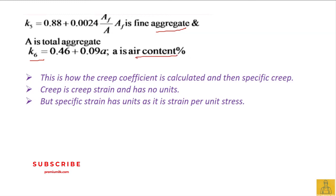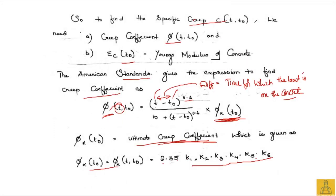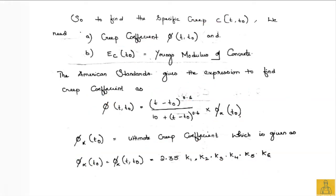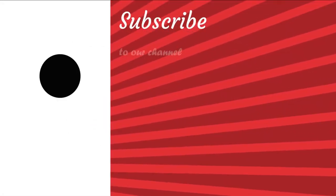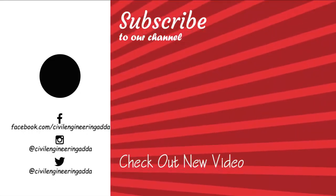This is how the creep coefficient is calculated. Once you know the ultimate creep coefficient, you get the creep coefficient for time t, and from that you can find the specific creep c, and ultimately the actual creep at age t.